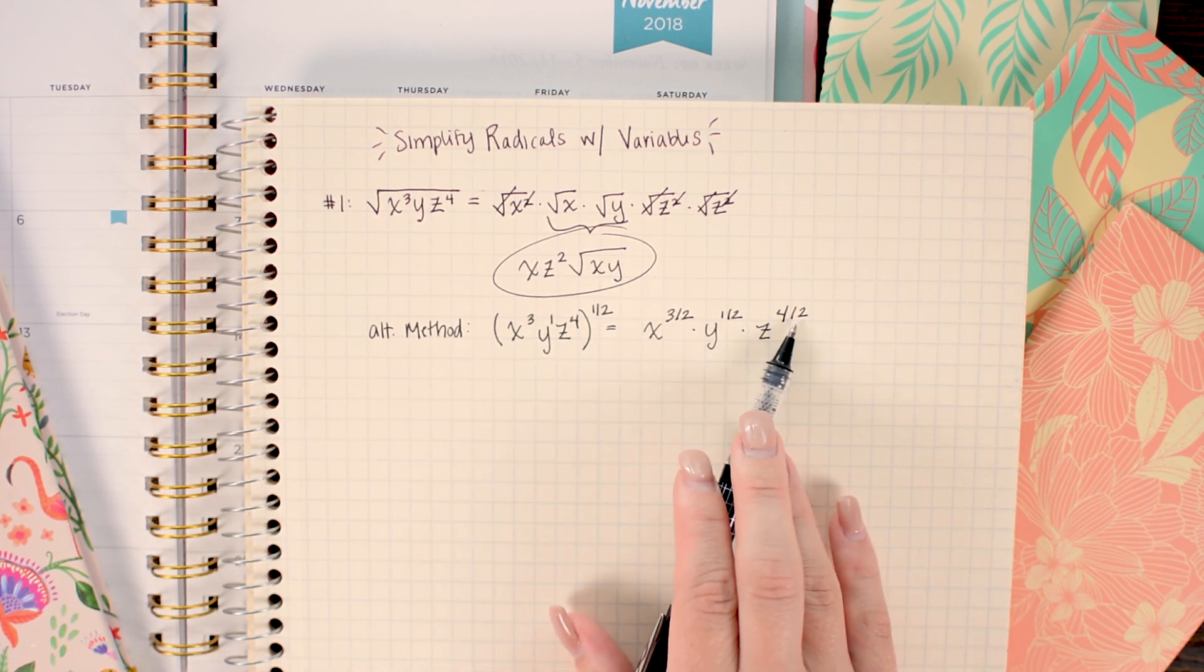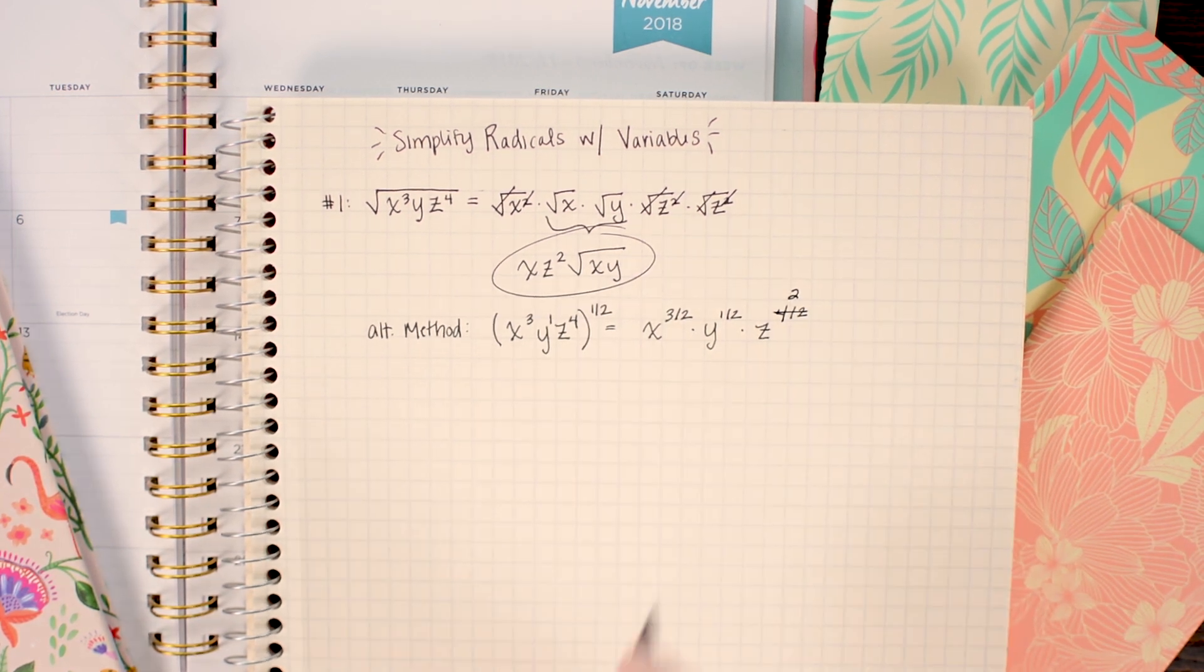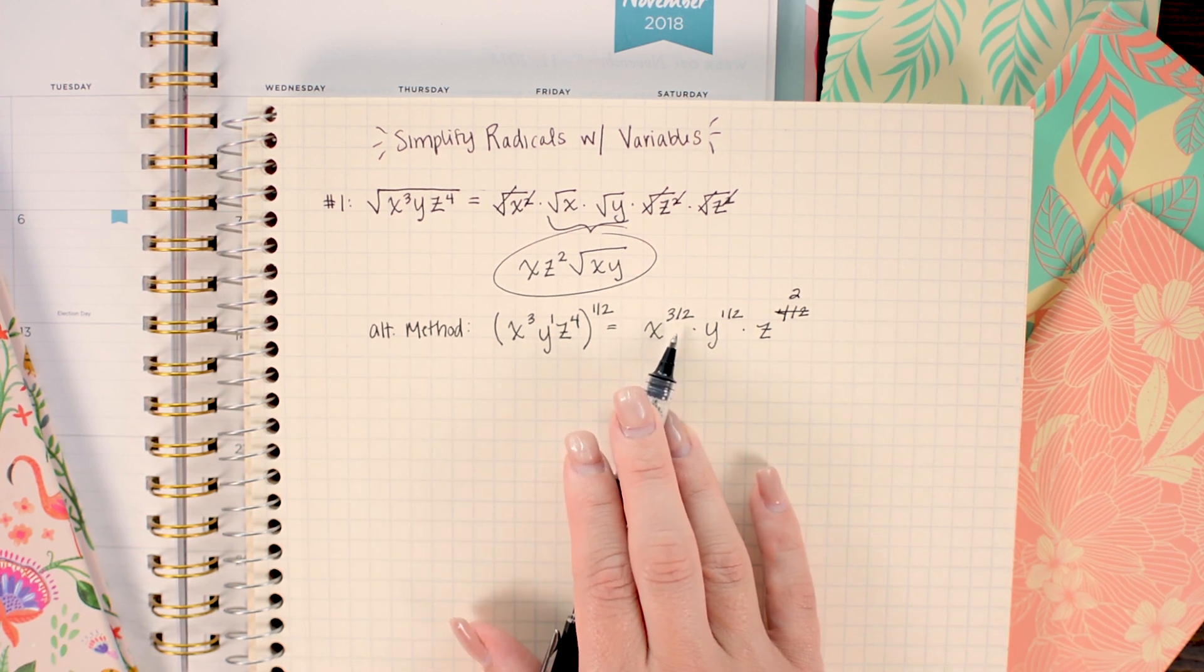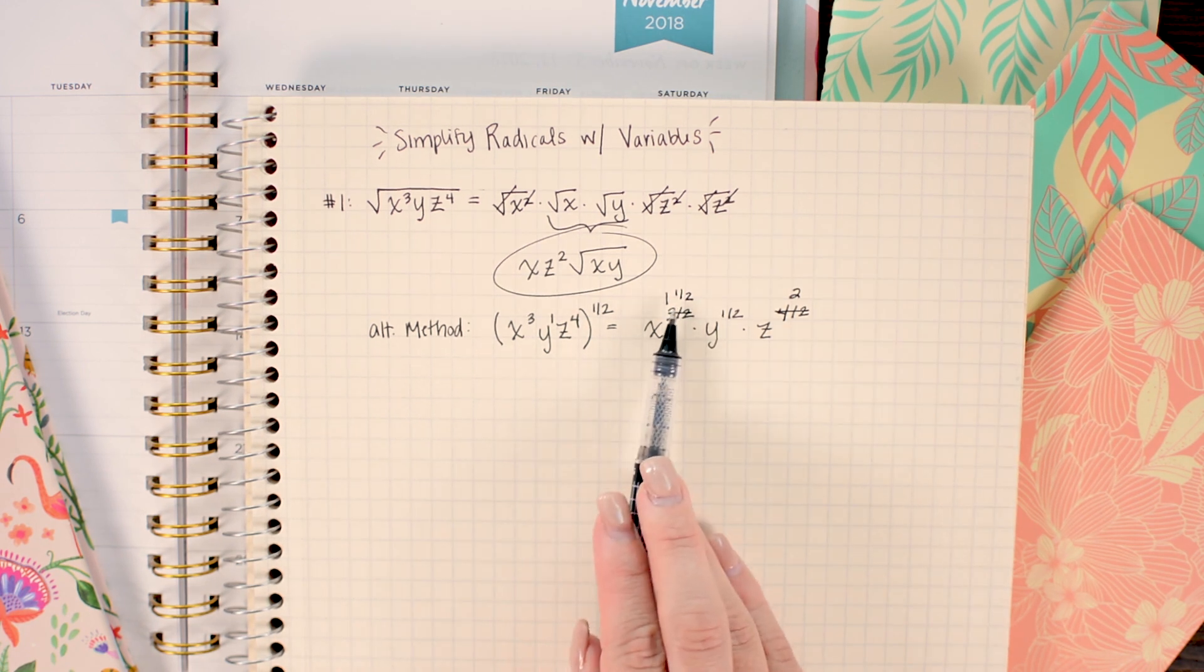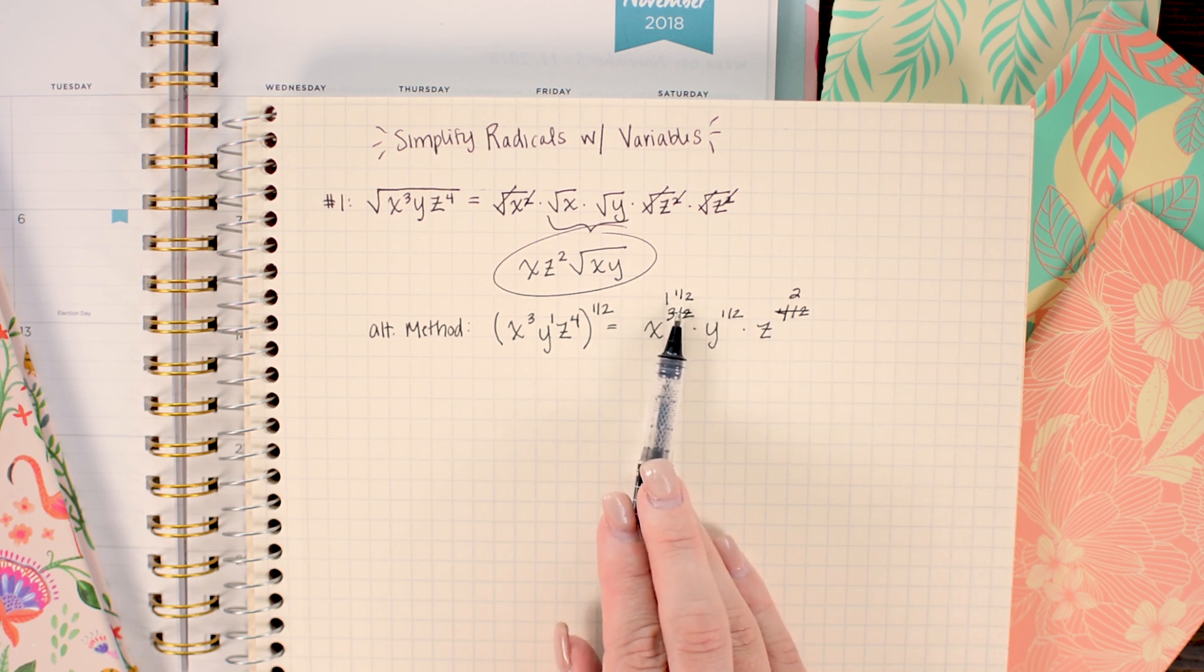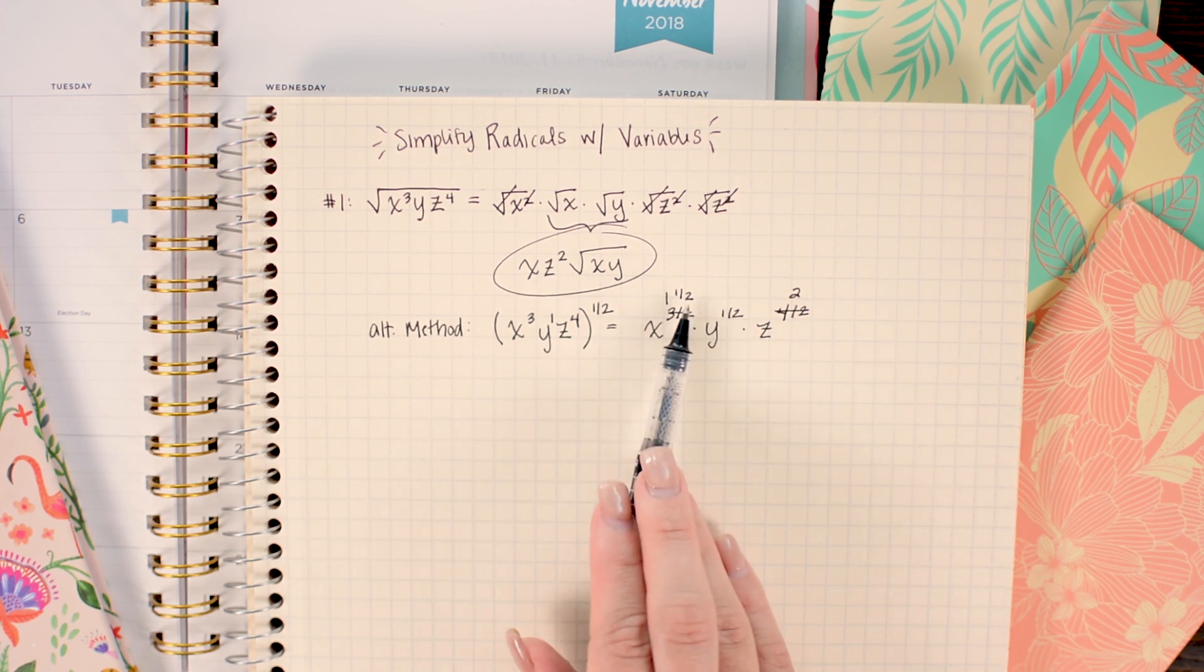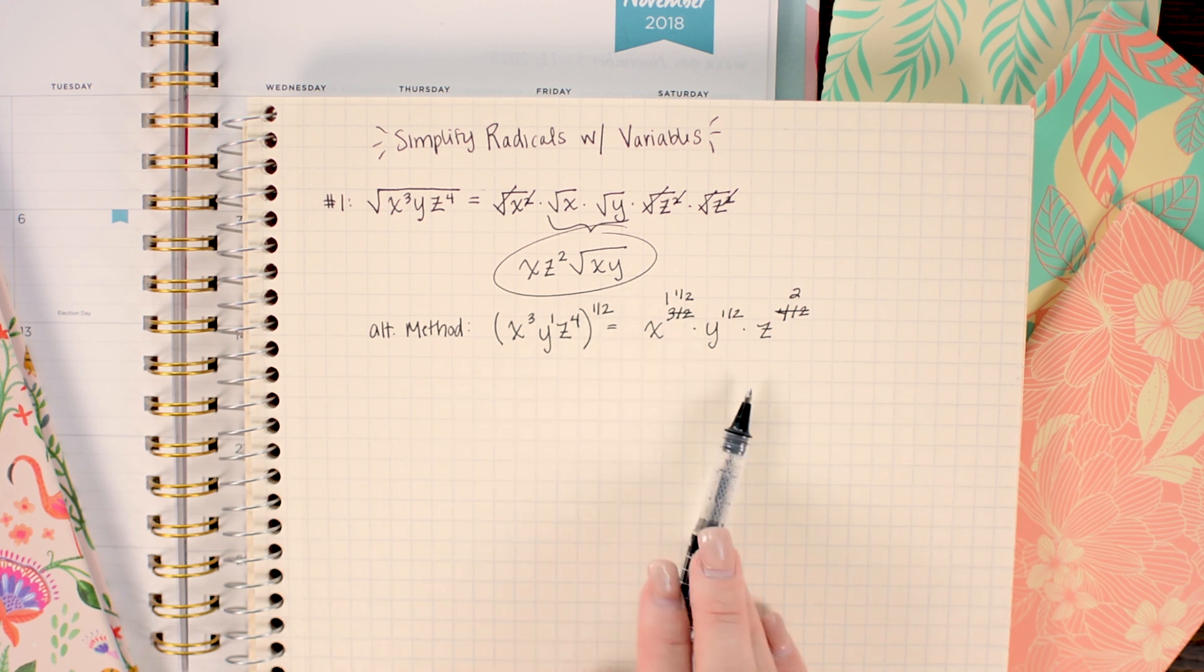All right now I'm just going to simplify. So the z to the four-halves, well four divided by two is two, so I'm just going to replace that with a two. The one-half I'm going to leave as is on this one and then the three-halves I'm going to rewrite as a mixed number instead of an improper fraction. So this becomes x to the one and a half. And the reason why it's useful to do that is one and a half is the same as one plus one-half. And remember when I'm multiplying two values together that have the same base, I can add their exponents. So here I'm just going to do the reverse of that. Instead of combining things to make one value I'm going to separate them back into two separate ones and you'll see how that works out really nicely.